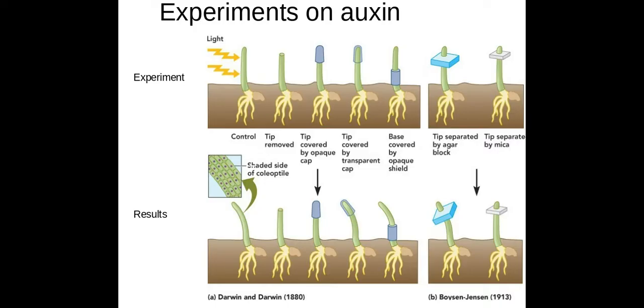In the fourth experiment the tip is covered by a transparent cap, so here the light can get through and it can break down the auxin which gathers here in the shoot tip. The light can break down the auxin which is on the lit side of the shoot, and therefore the plant will grow towards the light.